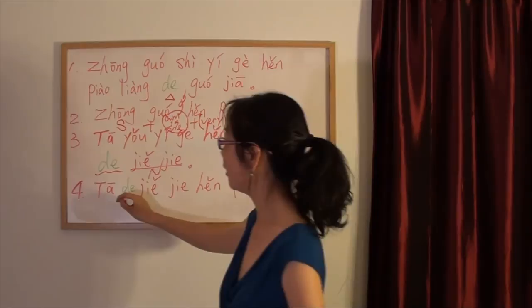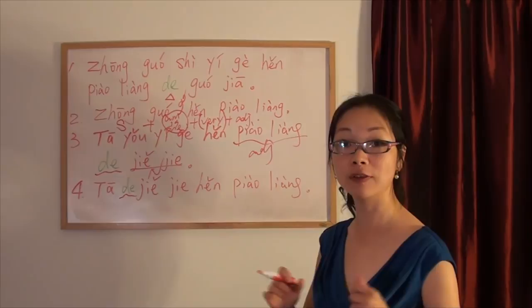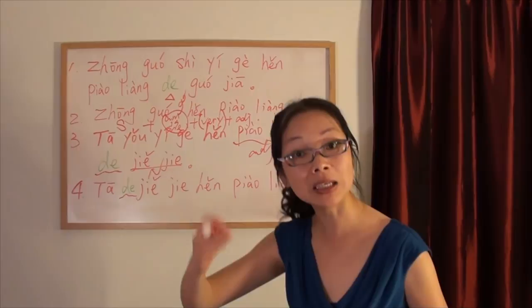That is number four. 她的姐姐很漂亮. Here, the de is not the second function. It's not the connection function. It is the possession. 她的姐姐.